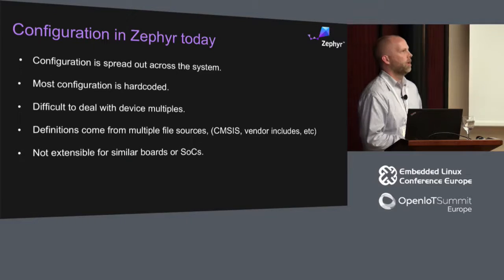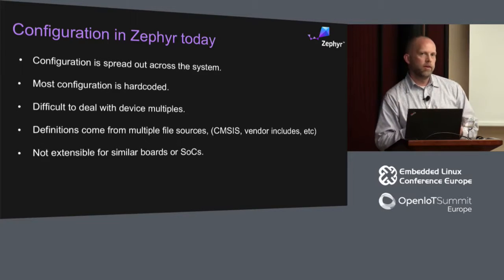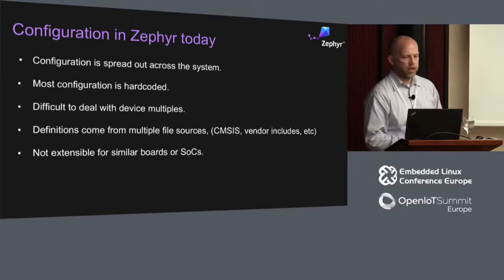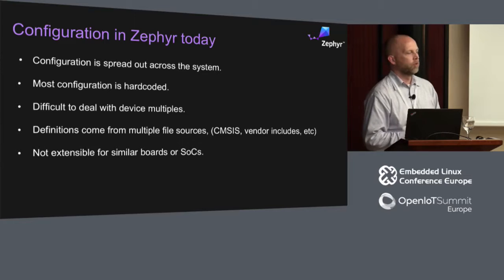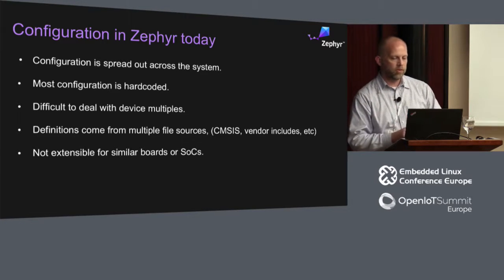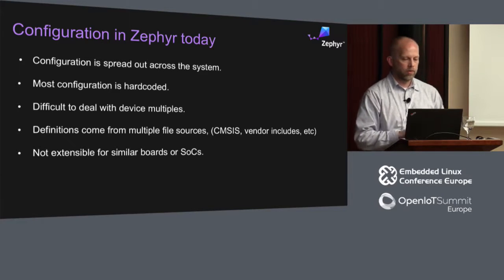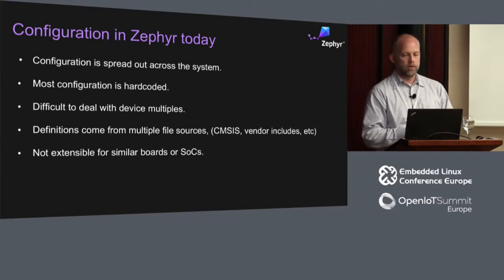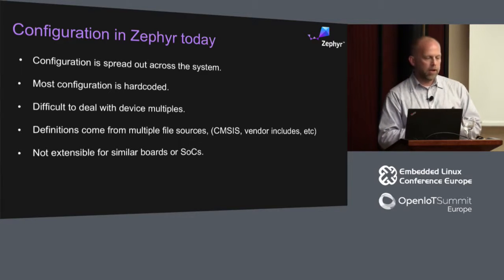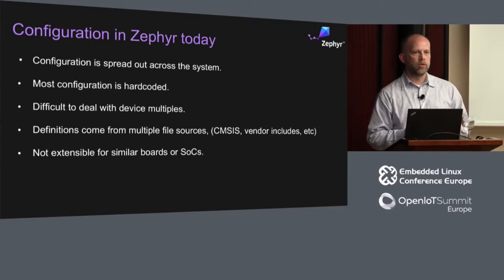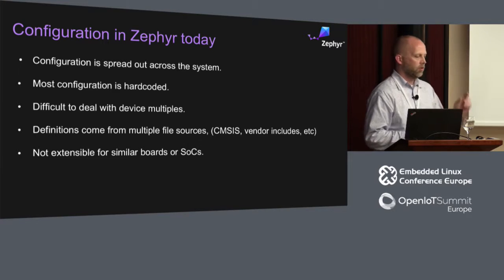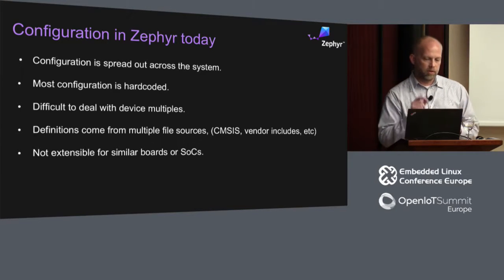Where you'll see differences is things like multiple devices — say two GPIOs versus five, or three UARTs versus one. Also, some definitions can come from multiple file sources: CMSIS headers generated by ARM or the vendor, or other include files. The thing is, this is not very extensible for similar boards. People actually copy and create new directories for variations, so you have to copy things around and then modify them to be specific to that particular board.